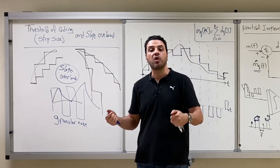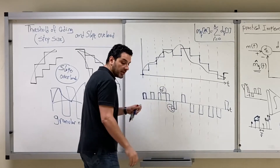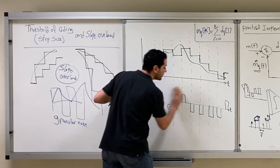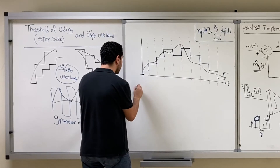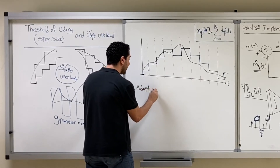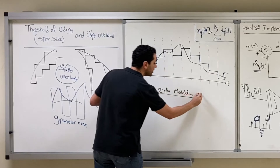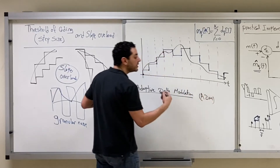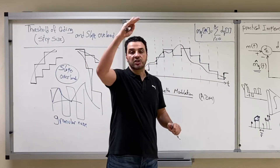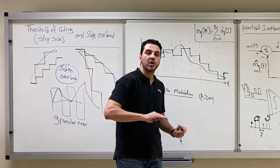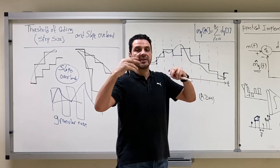To solve both problems together, they use something called adaptive delta modulation. In adaptive delta modulation, they change the step size depending on whether the signal has a high slope or a low slope. If the signal is going up with a high slope, they increase the step size. If the signal is smooth with a very small slope, they reduce the step size.